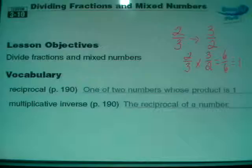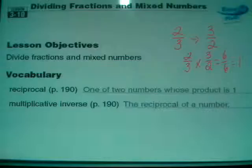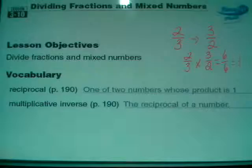And then we've got multiplicative inverse - that's simply the reciprocal of a number. The inverse property fits right along with commutative and associative and identity and all of those.